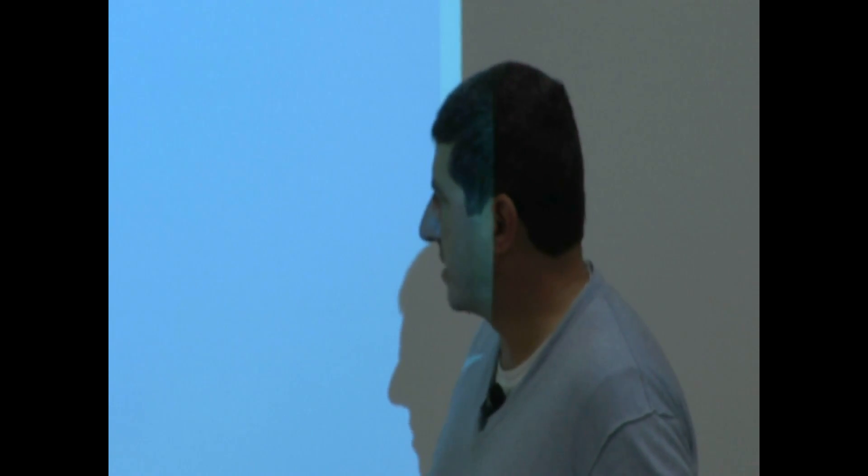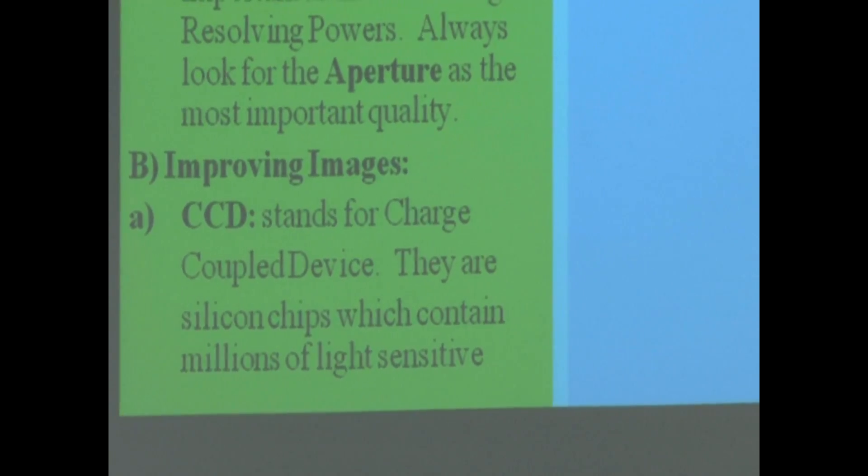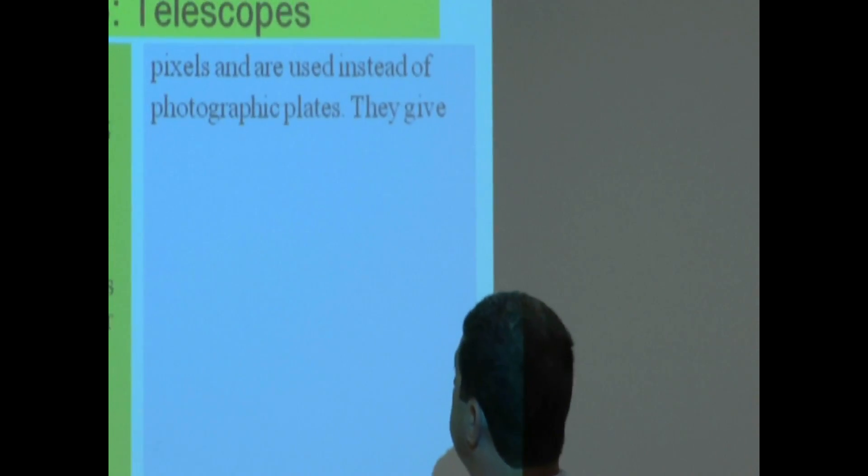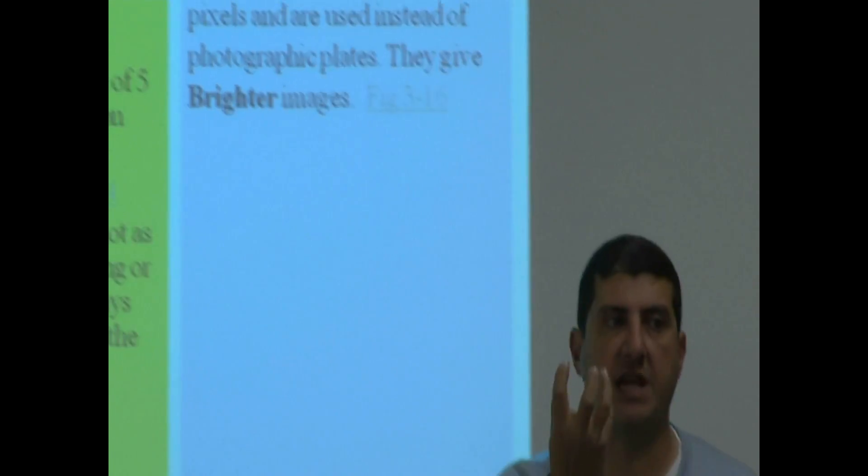So essentially, what these CCDs are, they are silicon chips. And inside of them, there's millions of little pixels. And whenever a light ray hits it, a photon of light, it activates a reaction in the circuit. So it's very light sensitive pixels.